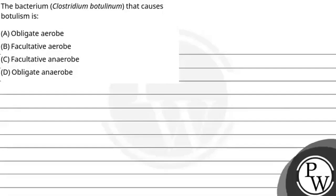Hello kids. Let's read the question. The question says that the bacterium Clostridium botulinum that causes botulism, and we have options given. Option A is obligate aerob. Option B is facultative aerob. Option C is facultative anaerob. Option D is obligate anaerob.